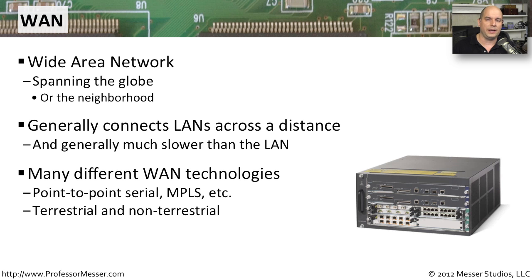There are many different ways to connect over a wide area network. There are point-to-point connections, serial connections, MPLS type connectivity. You can connect in the ground using cables all the way to that remote side, or you might use something like a satellite connection that's a non-terrestrial link. If you're going over those longer distances, then it's going to be a WAN connection.